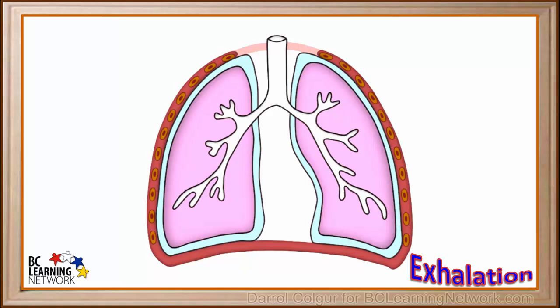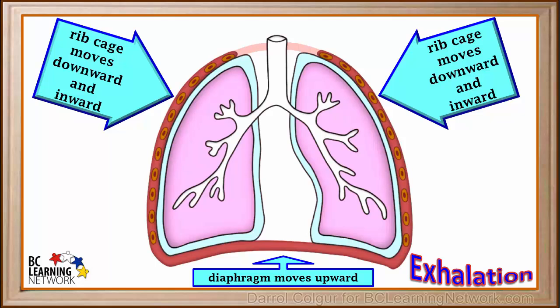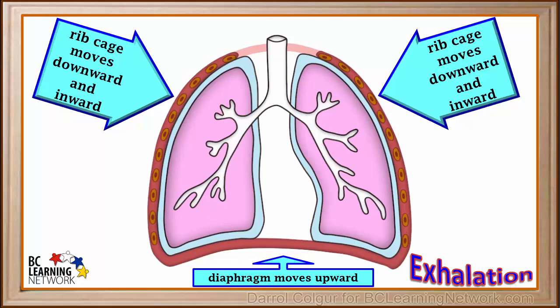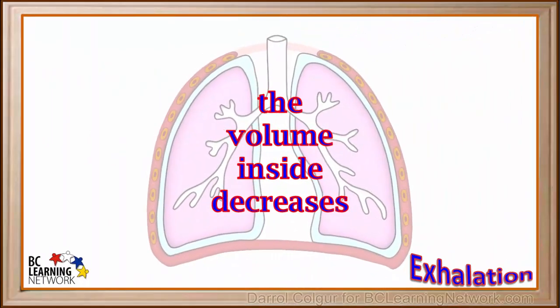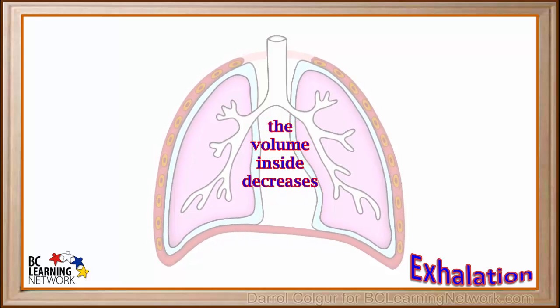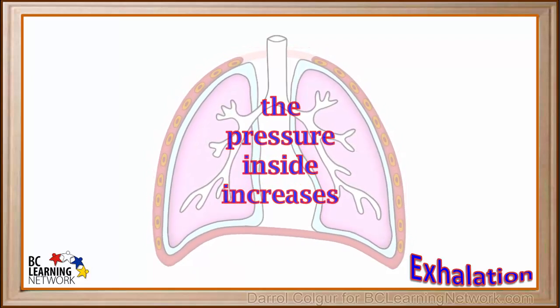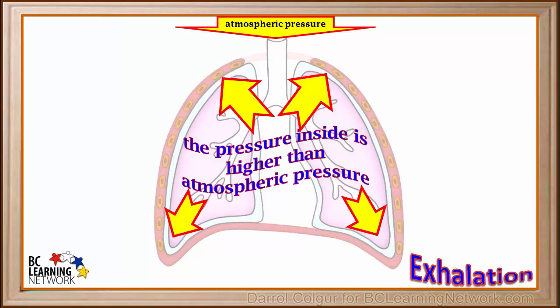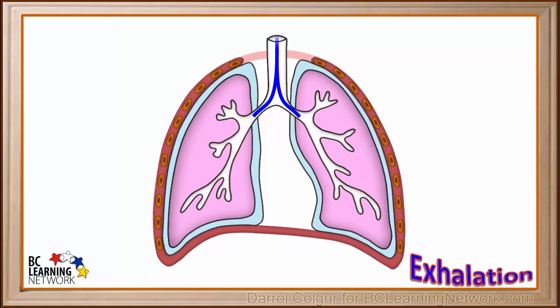Now we'll see how we exhale or breathe out. When the muscles between the ribs relax, the ribcage moves downward and inward. And when the diaphragm muscles relax, the diaphragm moves upward. As everything is pushing inward, the volume inside the chest cavity decreases. This means the pressure inside increases — now the pressure inside the chest cavity is higher than the atmospheric pressure. Since air moves from an area of higher pressure to lower pressure, as the volume in the chest cavity decreases, air is pushed out of the lungs.